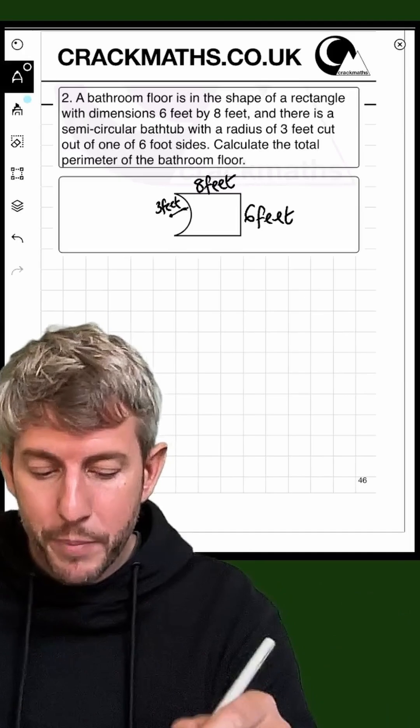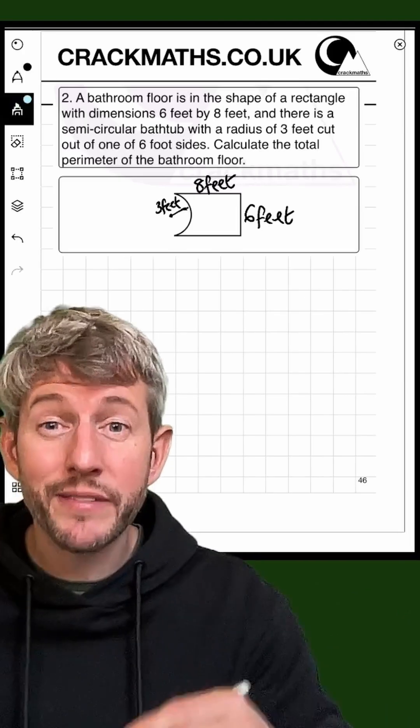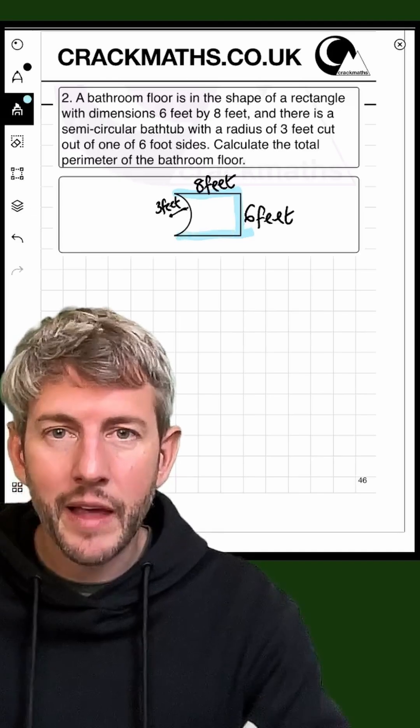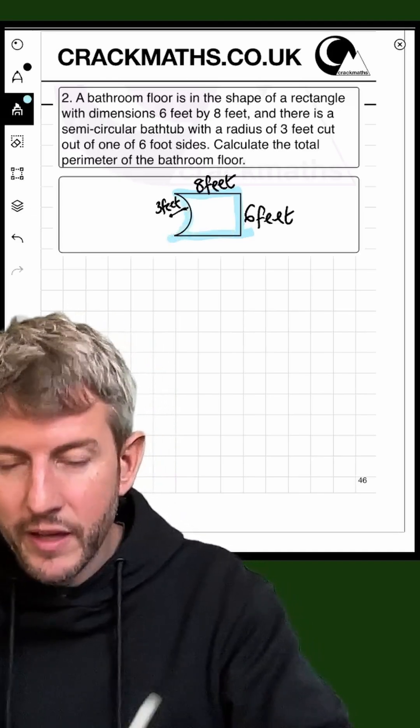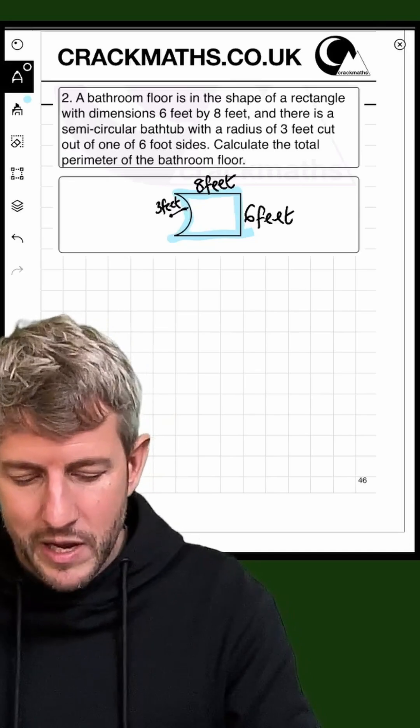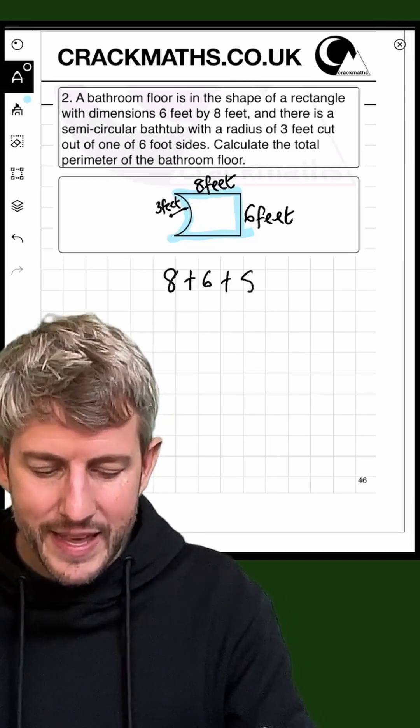Right, so we want the perimeter of this floor, which means the distance around the outside. So we want this, this, and this, and then we want this curve here. Let's first of all do the straight lines from the rectangle, so we're going to have 8 plus 6 plus 8.